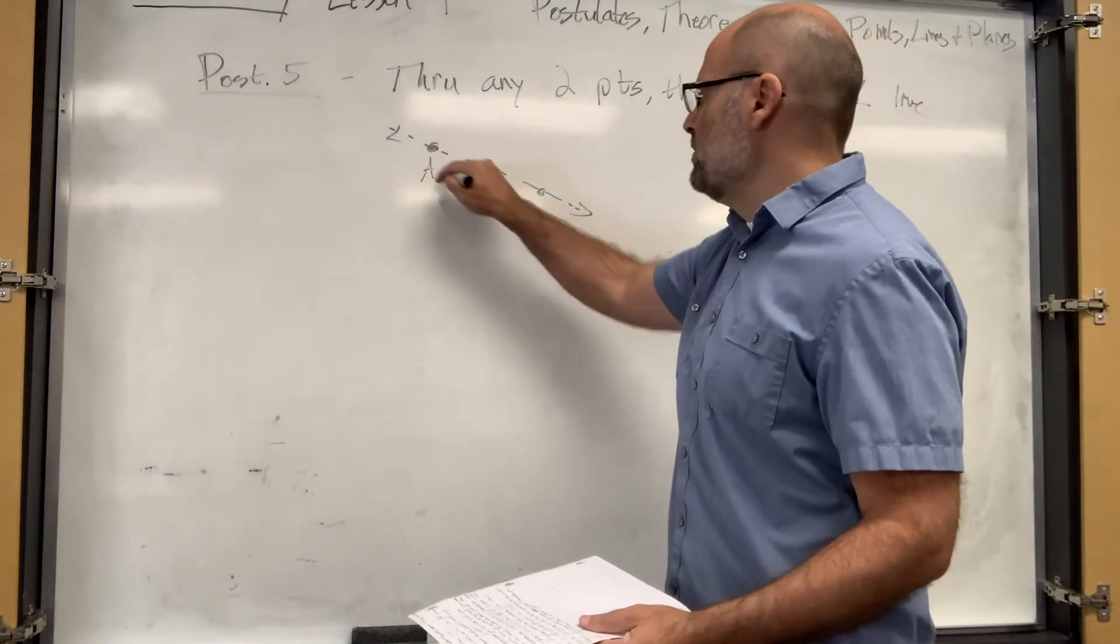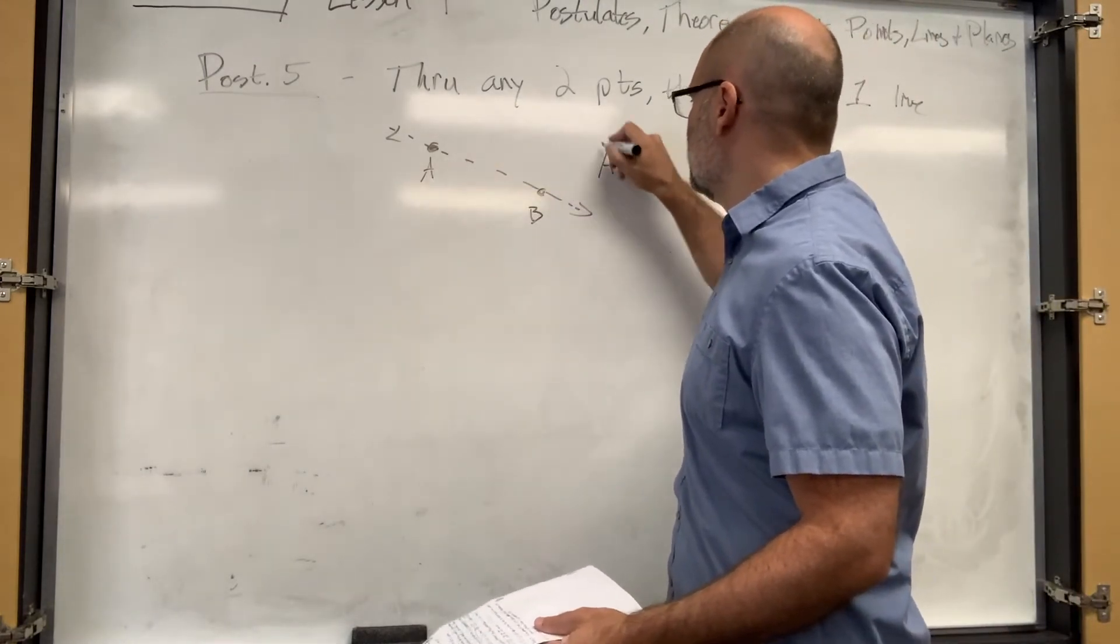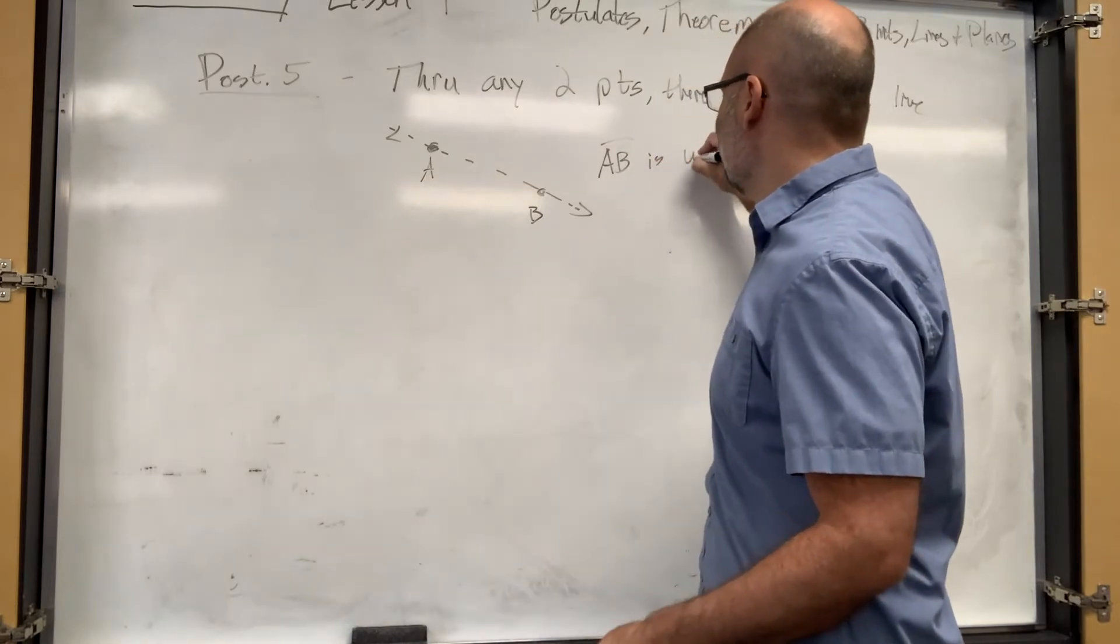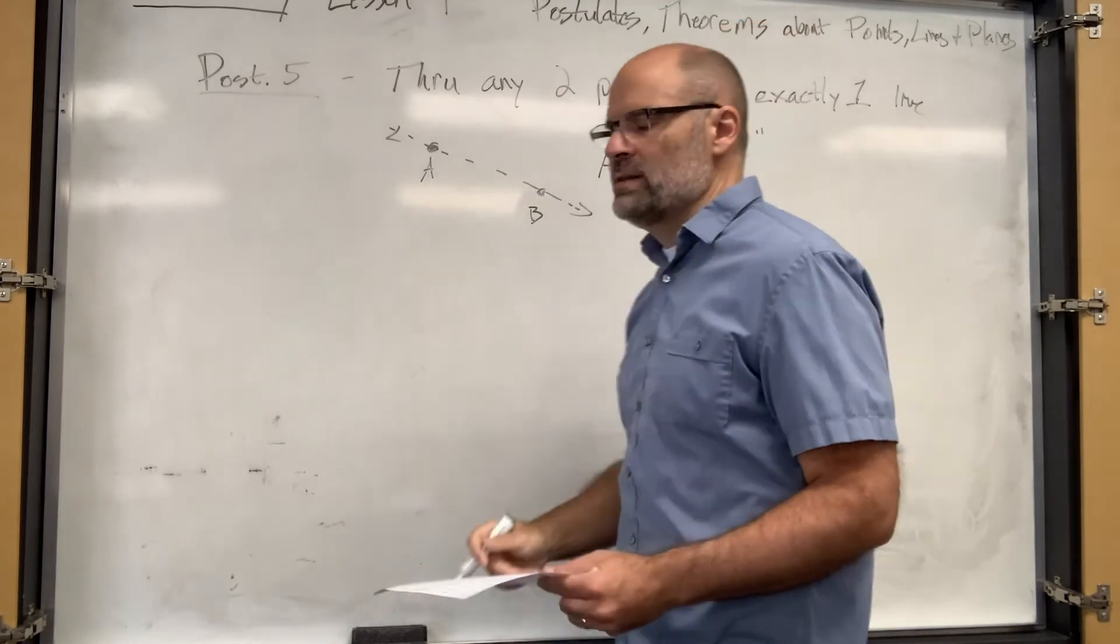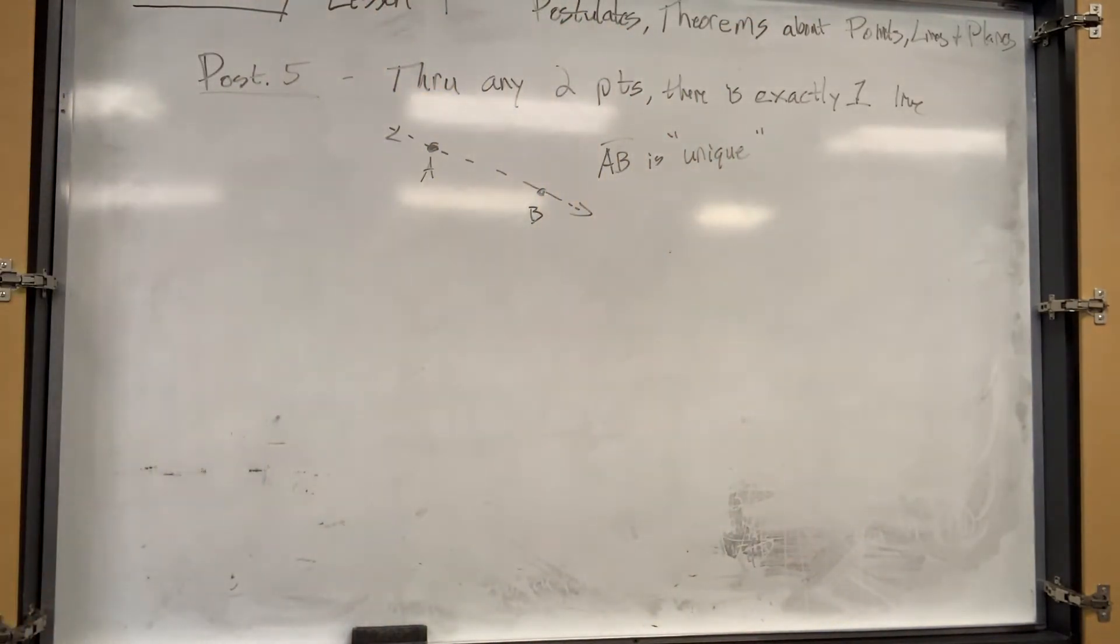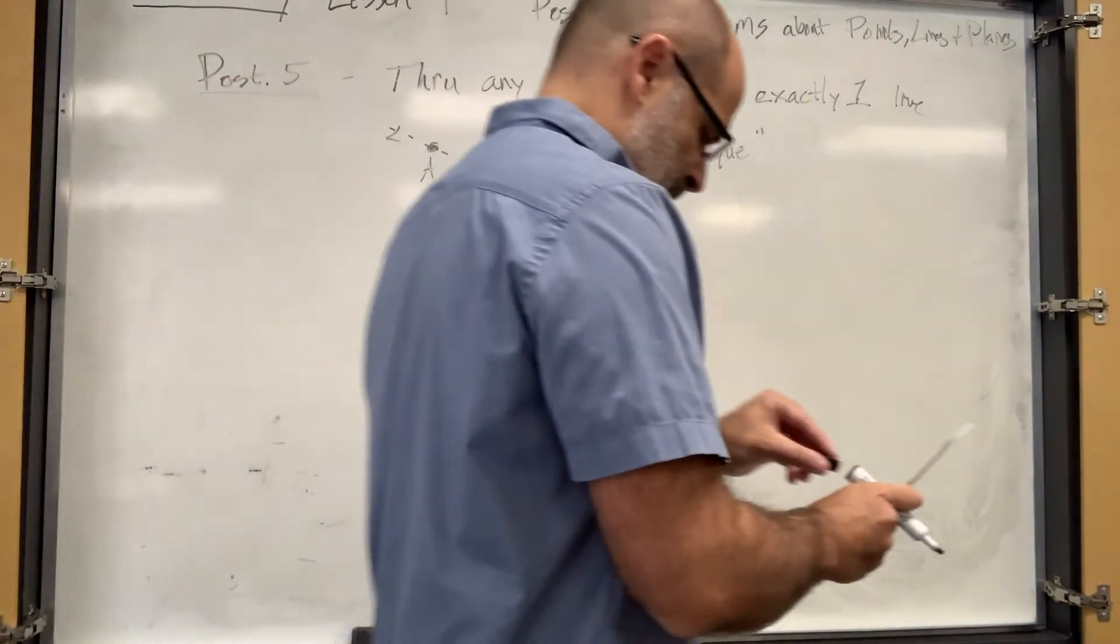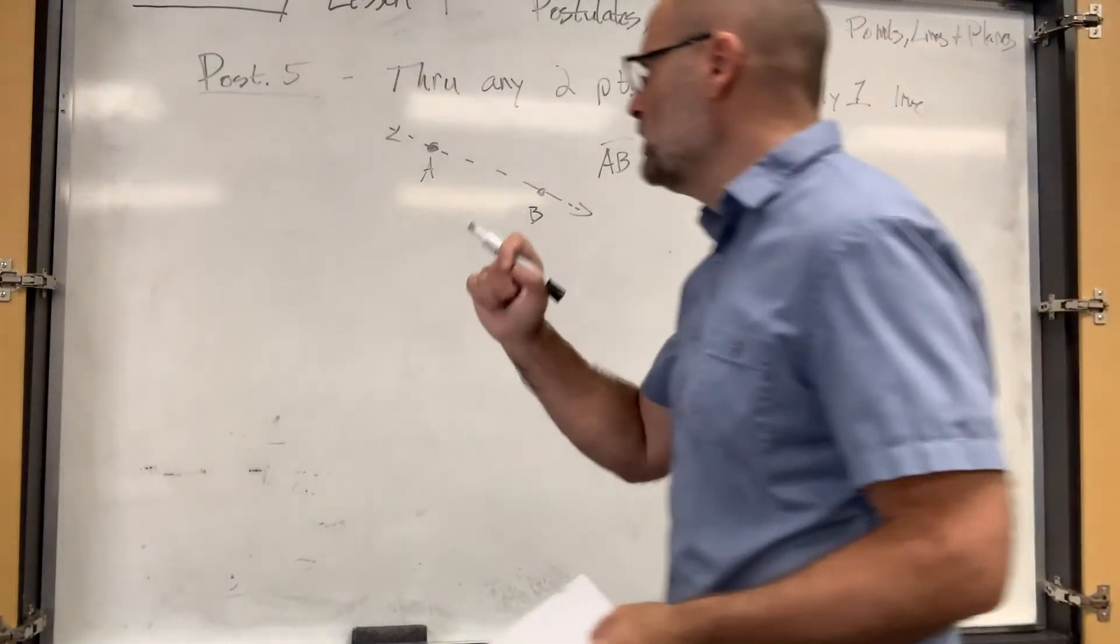If I labeled it AB, I would say line AB is unique. Unique is a geometric word that means one and only one. So through any two points, there exists only one line.